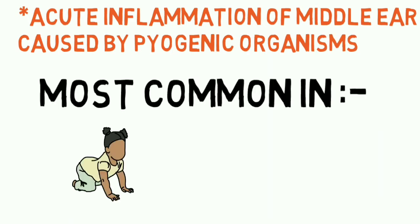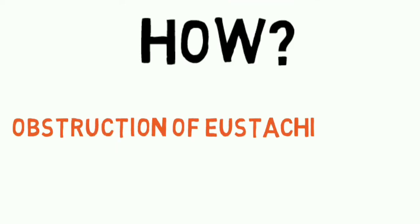How do you get this infection? It is most commonly due to obstruction of the Eustachian tube. Now let's review the normal anatomy.